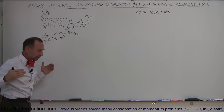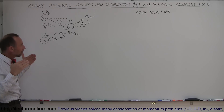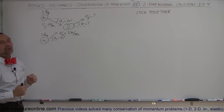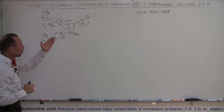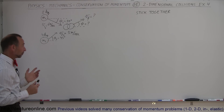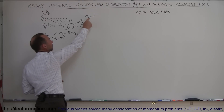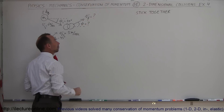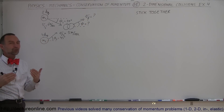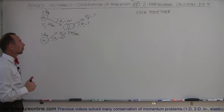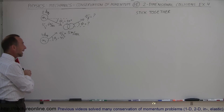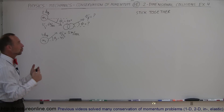We have two objects coming in from different angles with different velocities and masses. They collide and stick together. We need to find what direction they move and with what final velocity. We have two unknowns — v final and the final angle — which means we need two equations, so we must apply conservation of momentum in both the x and y directions.